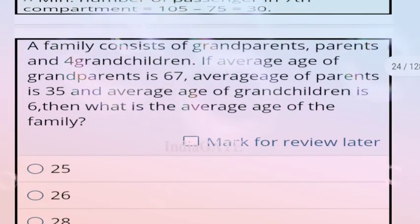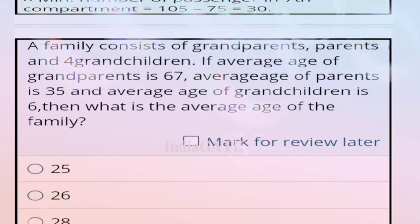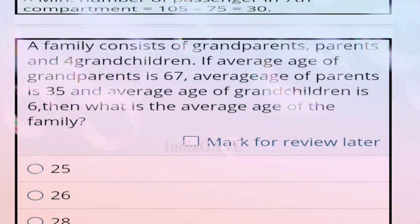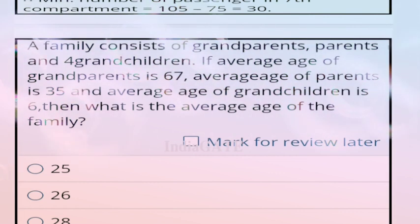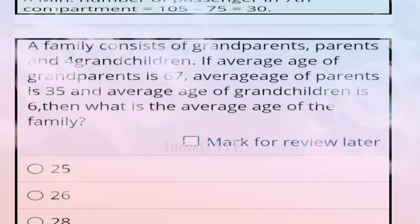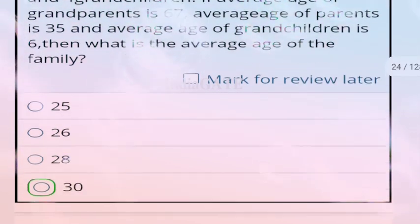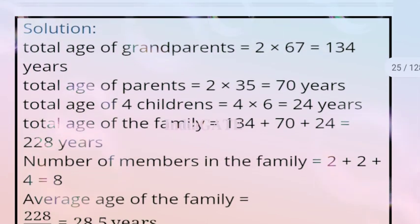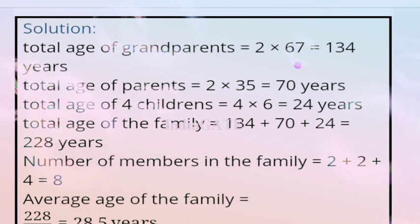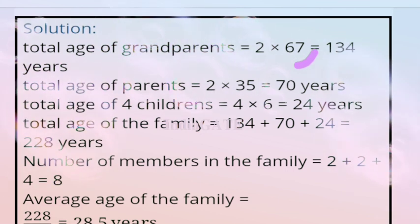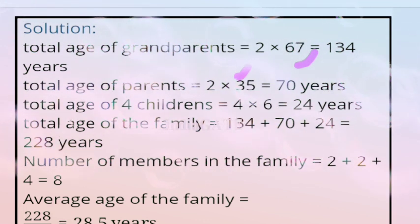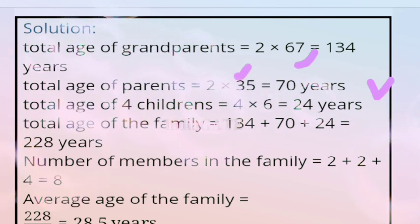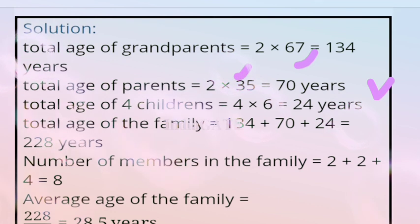Next question: a family consists of grandparents, parents, and 4 grandchildren. Average age of grandparents is 67, average age of parents is 35, average age of grandchildren is 6. What is the average age of the family? Correct answer is 28.5 years.